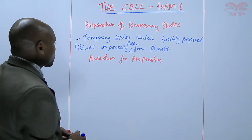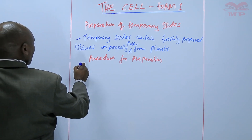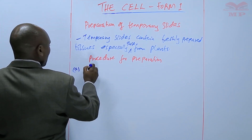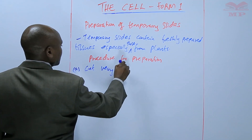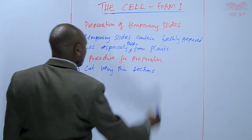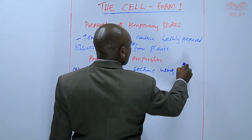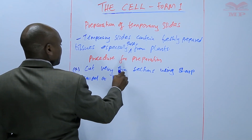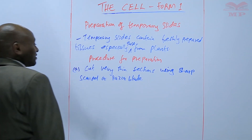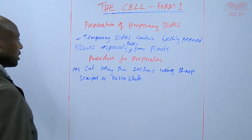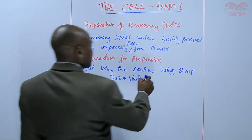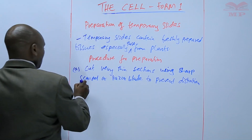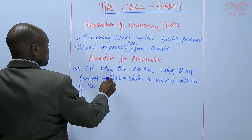The procedure for preparation: first, we cut very thin sections using a sharp scalpel or razor blade. You must cut very thin sections using a sharp scalpel or razor blade to prevent distortion of the cell structures.